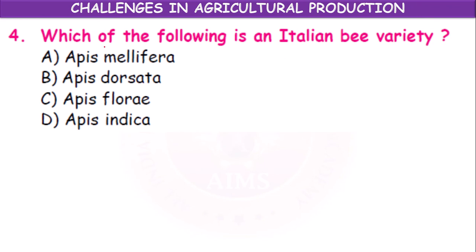Which of the following is an Italian bee variety? Apiculture is the growing of bees. The Italian bee scientific name is Apis mellifera. Other options are Apis dorsata, Apis florae, and Apis indica. Apis mellifera is the Italian bee variety.